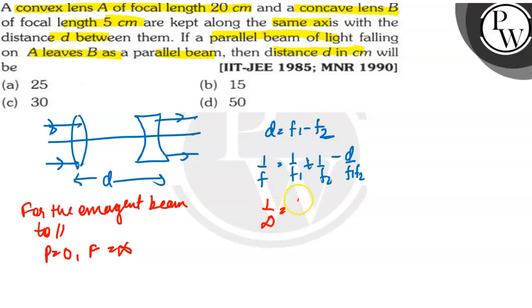1 upon infinite equals 1 by 20 minus 1 by 5 minus d by minus 20 into 5. 0 equals 1 upon 20 minus 1 by 5 plus d by 100.